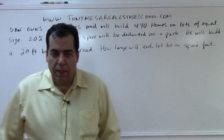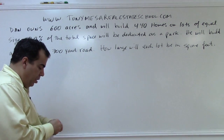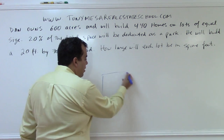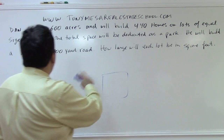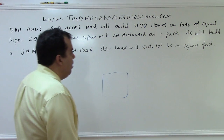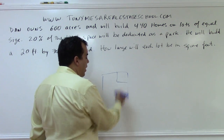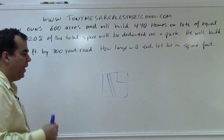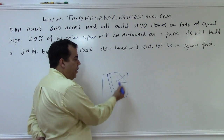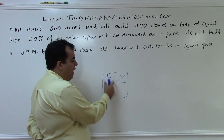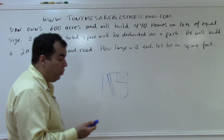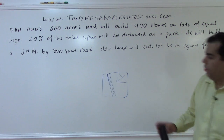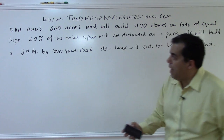Conceptually, there's a piece of land — the whole piece is 640 acres. Part of it is going to be a park (about 20%), and then there's going to be a road. Wherever you have the park and the road, you don't have space to build homes. So you have total space, and then you have the concept of usable space.